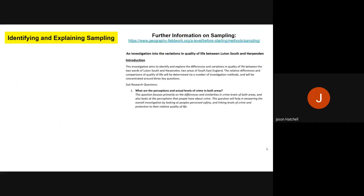So how do you identify and explain your sampling? First, I've put a link at the top right to a geography fieldwork website showing different types of sampling methods. To show you an example, I'm going back to my favorite investigation: variations in quality of life between Luton South and Harpenden. My first sub-research question is: what are the perceptions and actual levels of crime in both areas? I'll take you through how I identify and explain the sampling.